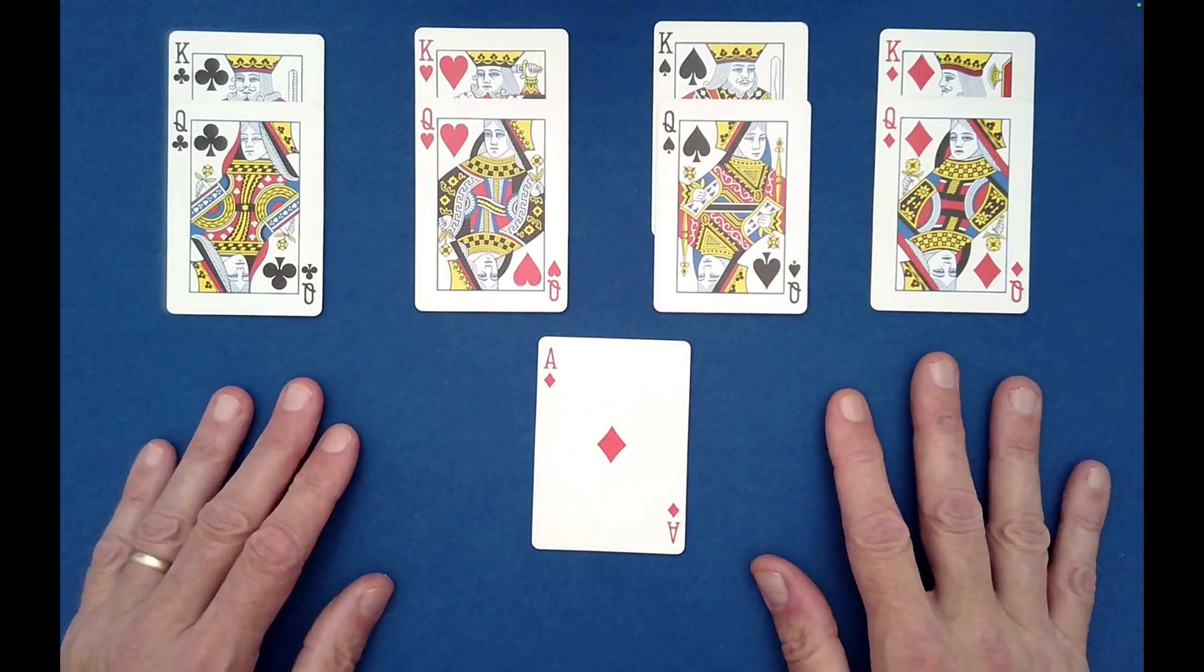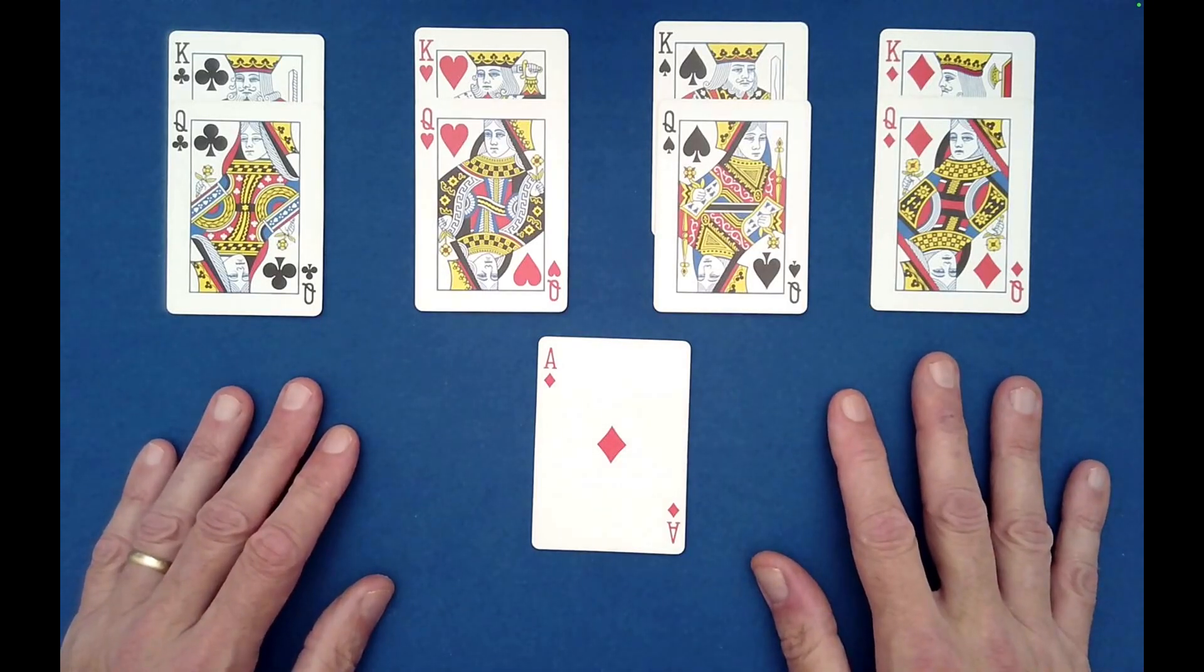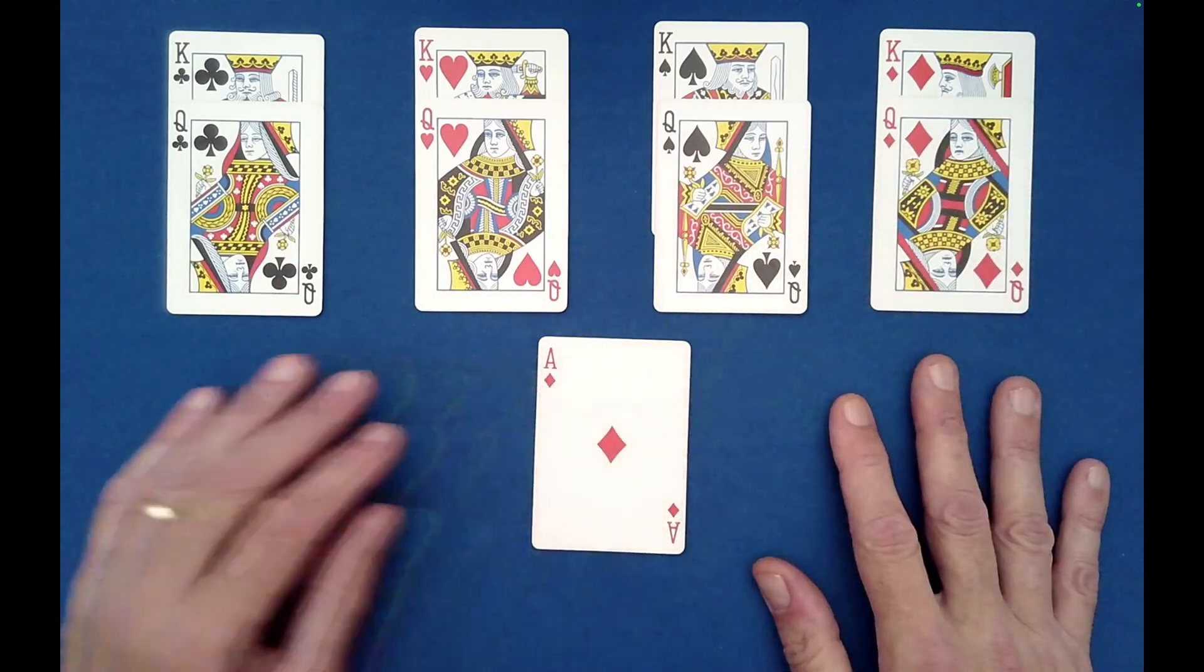Okay, so for this you need the kings and queens of the four suits. So I have clubs, hearts, spades, diamonds. And then you need like a joker or an ace as a helper card.